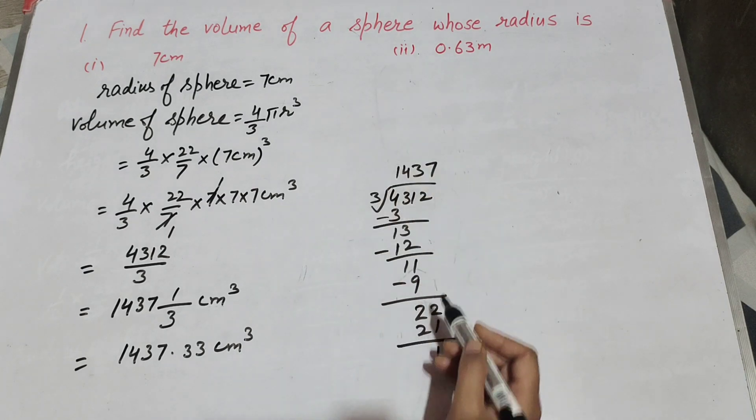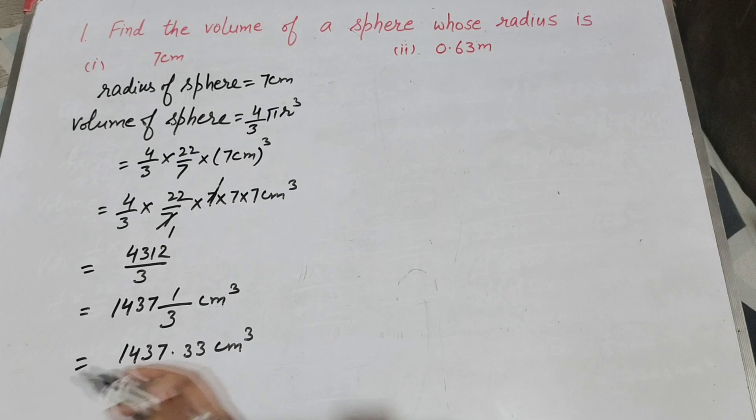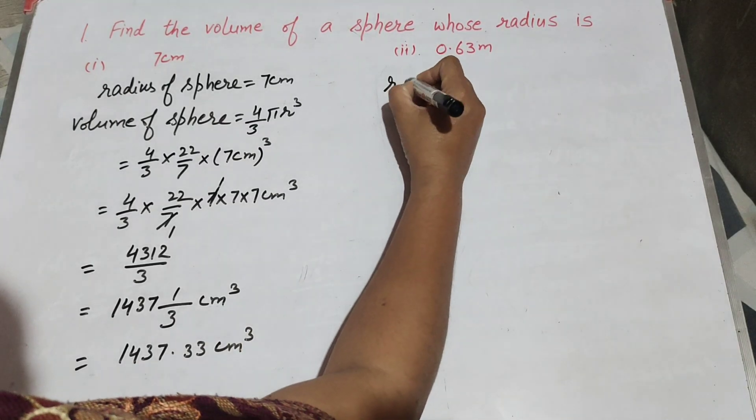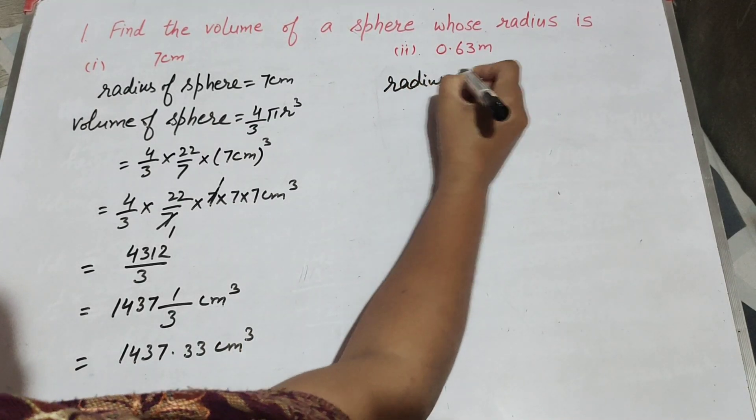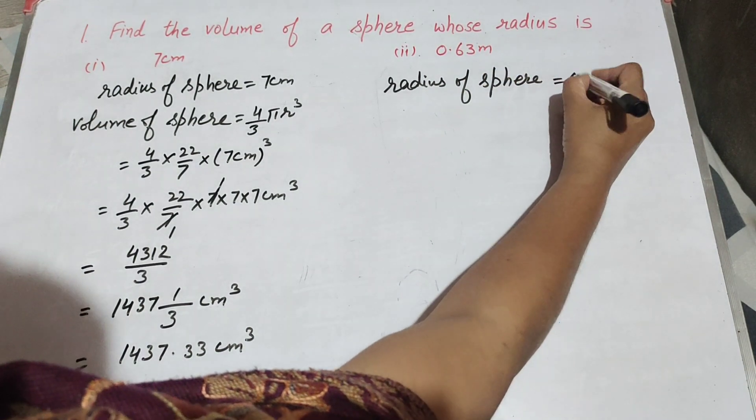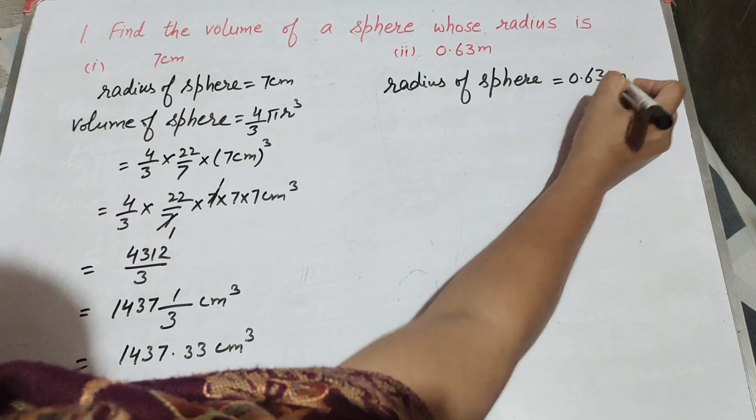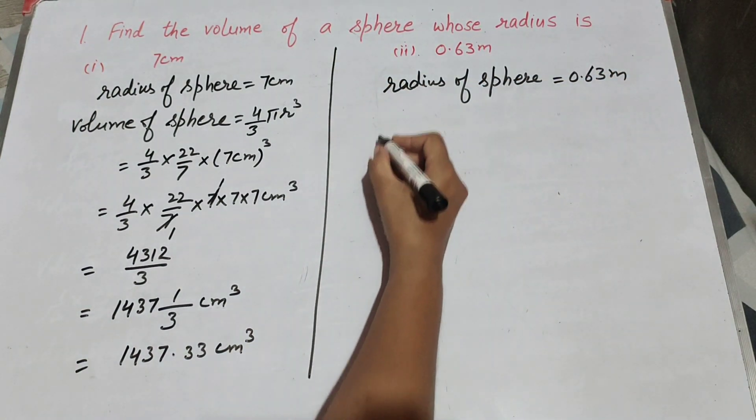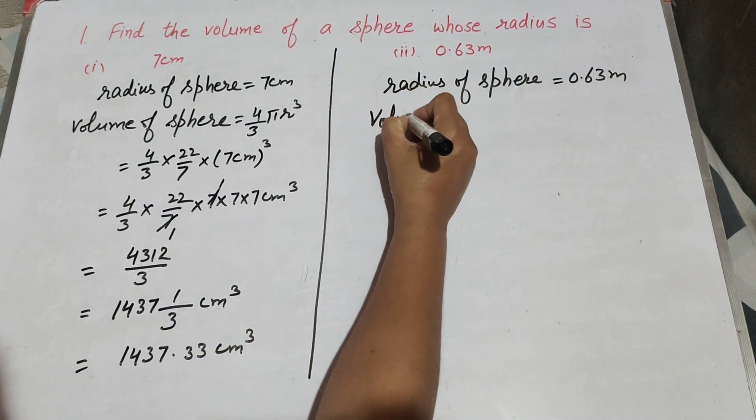So now we move to second part. In this, given is radius of sphere. Radius of sphere is equal to 0.63 meter. We find volume of sphere.